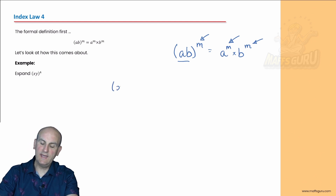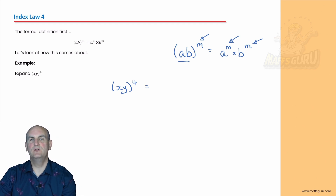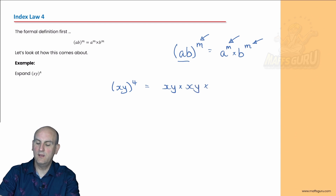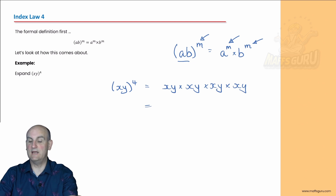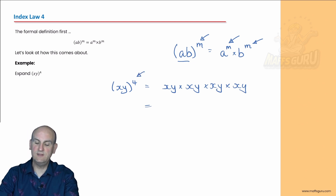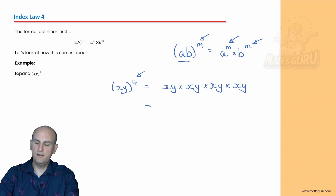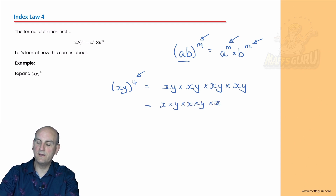Let's have a look at an example. I've got (xy) all to the power of 4. If we go back to expanded form notation from the very first video, we could write that out as xy times xy times xy times xy, because that power of 4 tells you to write everything inside the bracket 4 times with times signs between it. But actually, that's the same as x times y times x times y times x times y times x times y.